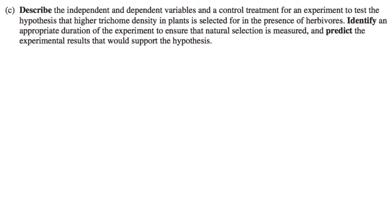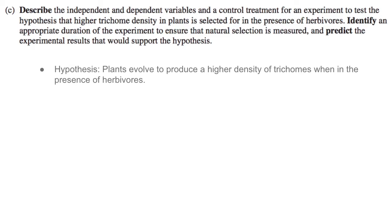Describe the dependent and independent variables and the control treatment for an experiment to test the hypothesis that higher trichome density in plants is selected for in the presence of herbivores. Identify an appropriate duration of the experiment to ensure that natural selection is measured, and predict the experimental results that would support the hypothesis. Our hypothesis is that the plants will evolve to produce a higher density of trichomes on their stems when in the presence of herbivores.